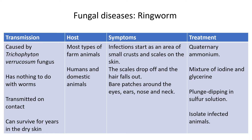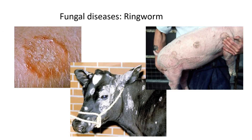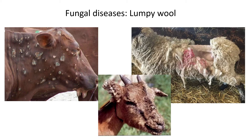A mixture of iodine and glycerine works similarly to the sulfur cream. Plunge dipping in a sulfur solution is also effective. Isolate any infected animals so the disease doesn't spread further. That covers ringworm — not a lot of information, but it moves quickly for fungal diseases.